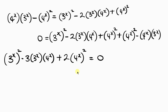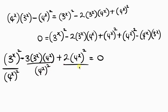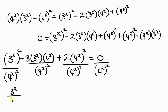Our next step is to divide through by 4 to power x squared. So I'm going to divide each term by 4 to power x squared. Dividing 3 to power x squared by 4 to power x squared gives 3 to power x over 4 to power x, all raised to the same power.